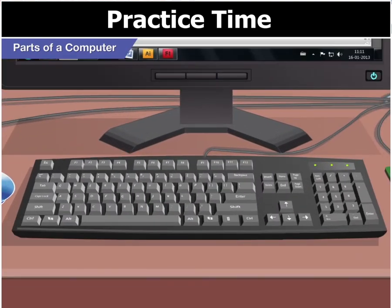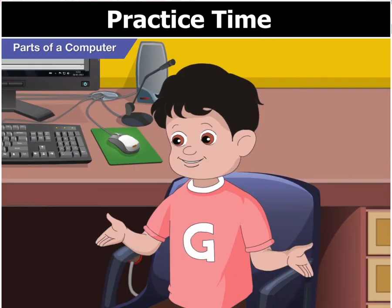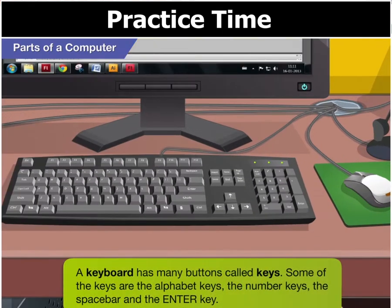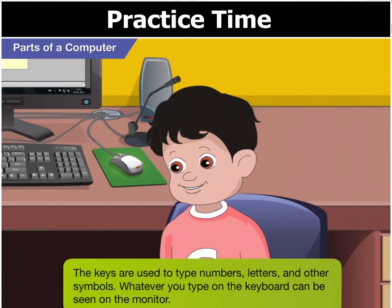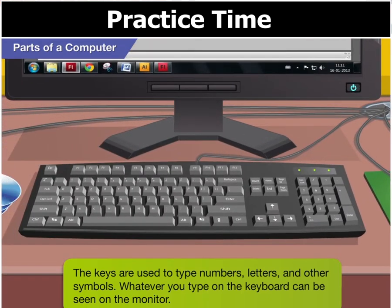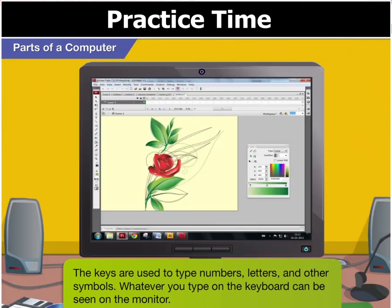This here is the keyboard. A keyboard has many buttons called keys. Some of them are the alphabet keys, the number keys, the space bar and the enter key. These keys are used to type numbers, letters and other symbols. Whatever you type on the keyboard can be seen on the monitor.